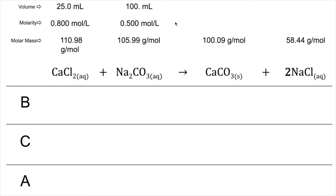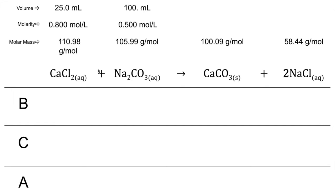In this type of problem, instead of being given a mass as in many prior stoichiometry problems, we're given both a volume and a molarity of the reactants. This is a 0.800 molar solution, meaning there are 0.800 moles of solute in one liter of solution — or equivalently, 0.800 moles in 1000 milliliters of solution.